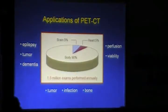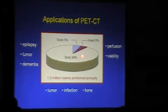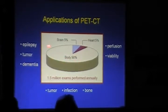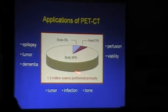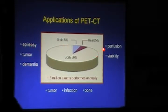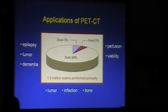Applications of PET-CT: approximately 90% of PET-CT is for oncology — tumor, infection, and bone. In the US, we have around 1.5 million exams performed annually. For the brain, we have two indications: dementia and epilepsy. For the heart, we have viability. These currently correspond to approximately 5% of investigations.